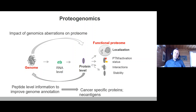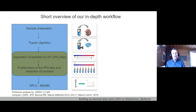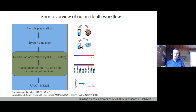A particular addition to the proteogenomics field is looking at genome aberrations in cancer and how they can cause cancer-specific proteins — so-called neoantigens — which I'll discuss later. In the mass spectrometry-based proteomics workflow, we start with sample preparation, protein extraction, enzymatic digestion, and then fractionate the peptidome to reach deeper into the proteome. We have been developing a peptide isoelectric focusing-based fractionation for about 15 years, which I'll return to later in the talk.